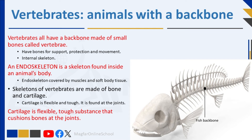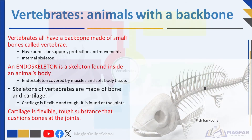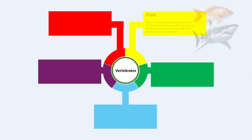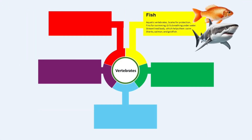There are five groups of animals that have an endoskeleton: mammals, birds, fish, reptiles and amphibians. Let us look at each of these briefly. Fish are aquatic vertebrates that have scales for protection, fins for swimming and gills for breathing underwater. They have a streamlined body which helps them swim. Some examples of fish are sharks, salmon and goldfish.